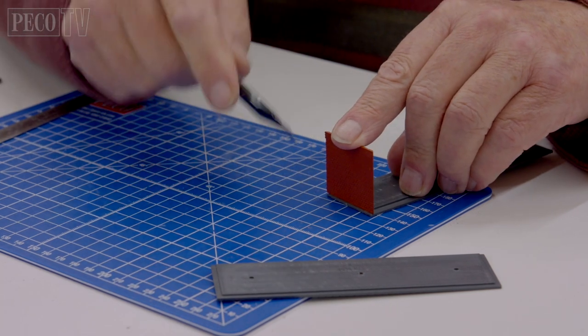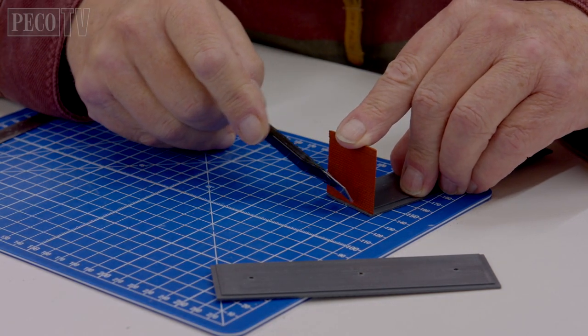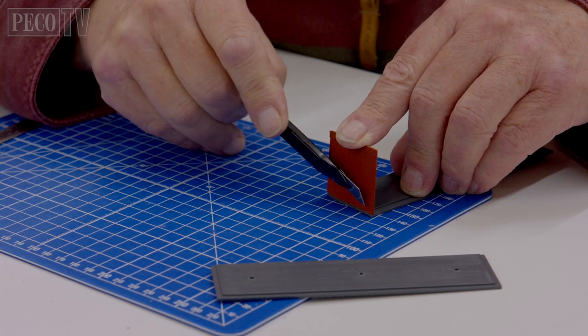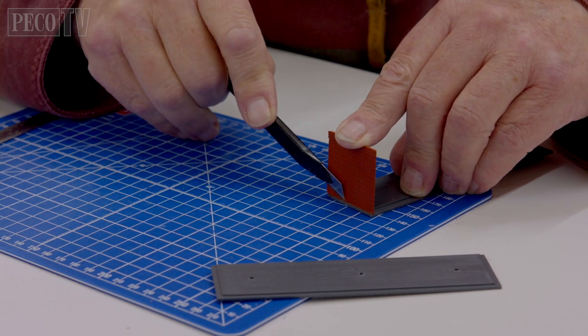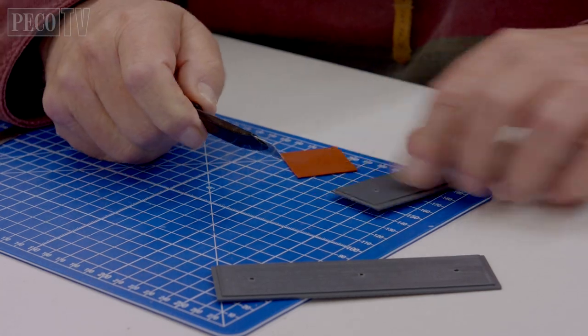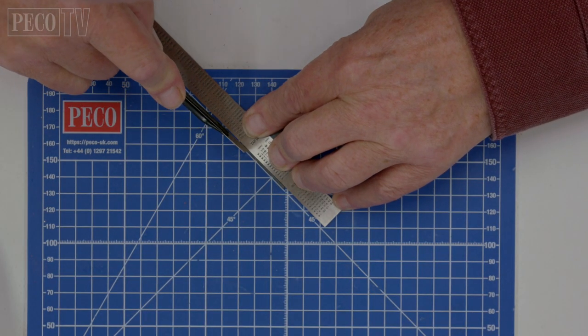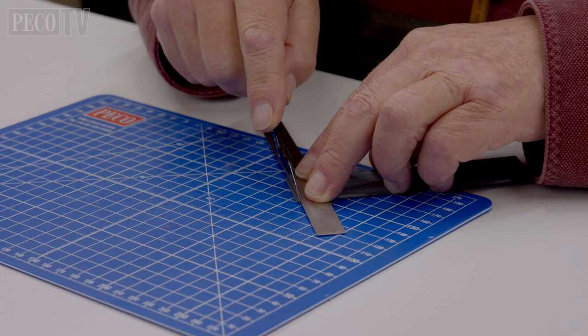You also need to trim the roof of the station building only at the end of each section. Using a section of wall mark with a Stanley blade and then use the rule and apply more pressure to remove the excess plastic as shown here. Take care when doing this.